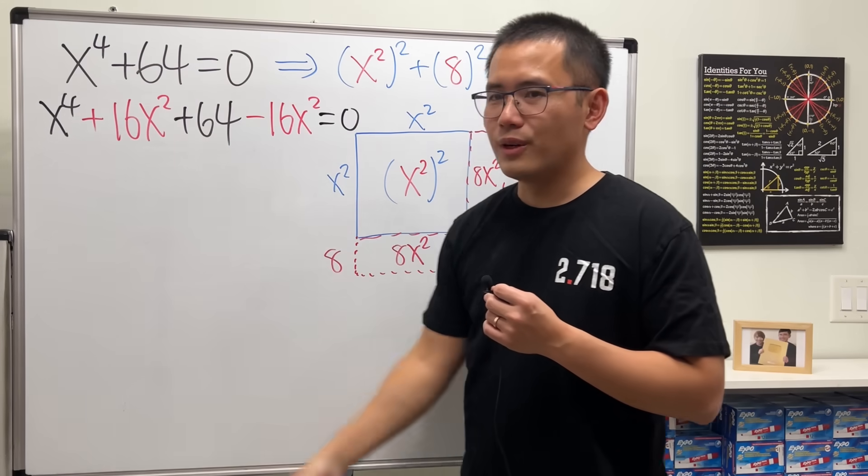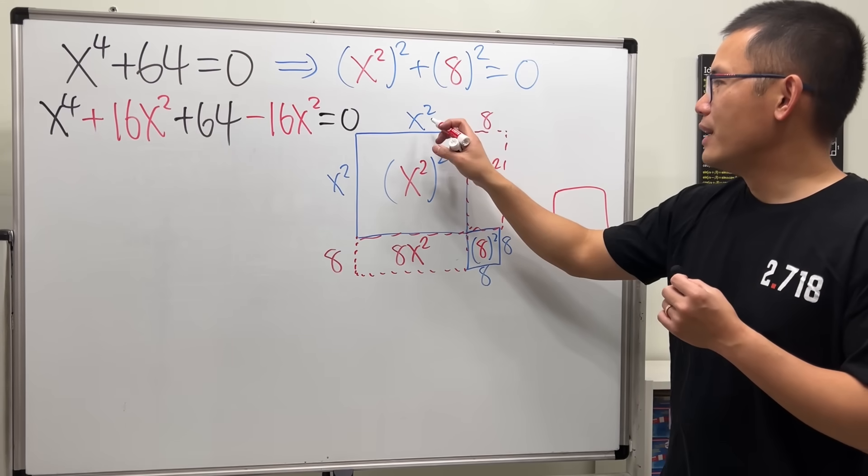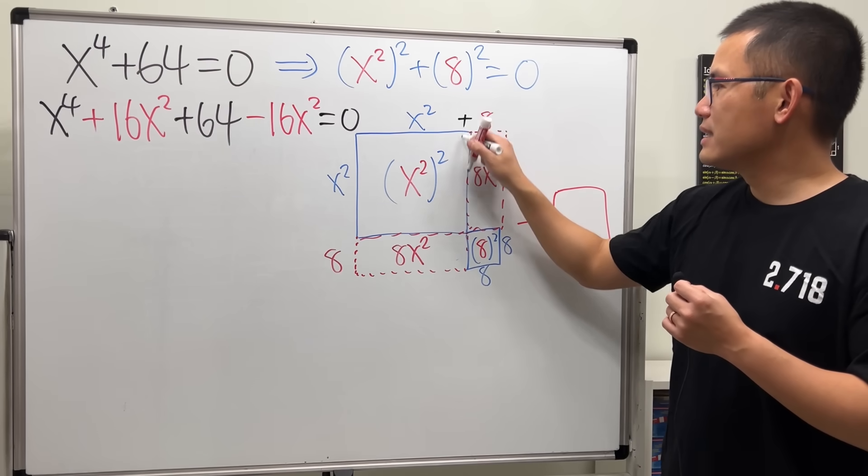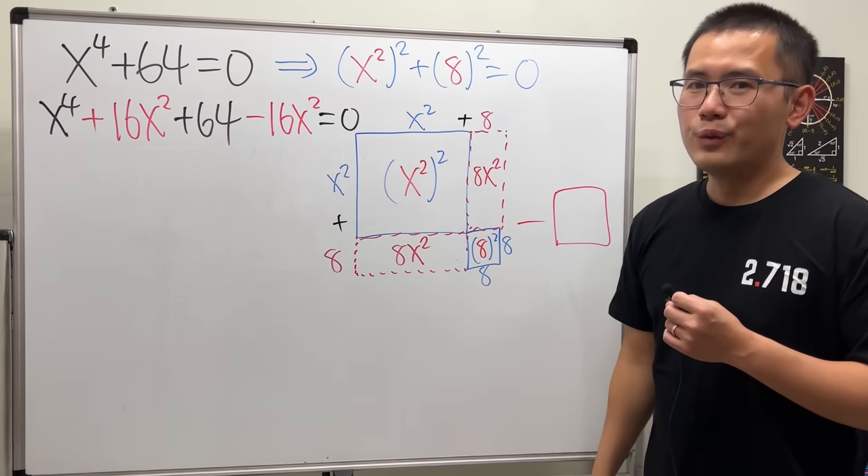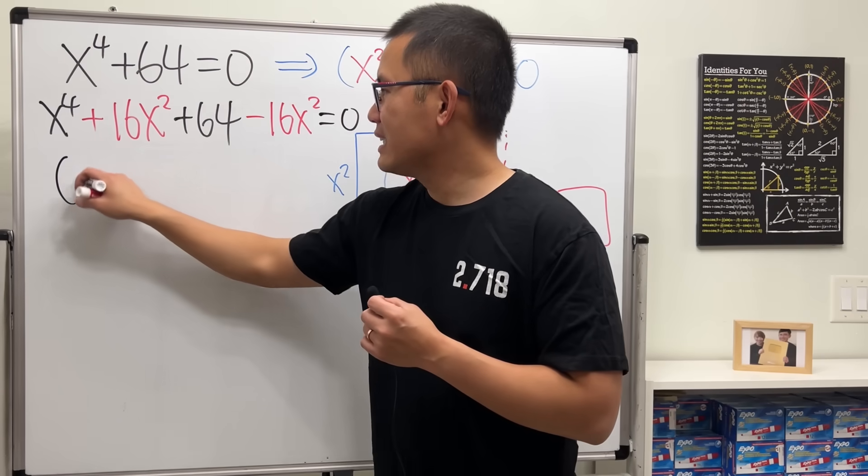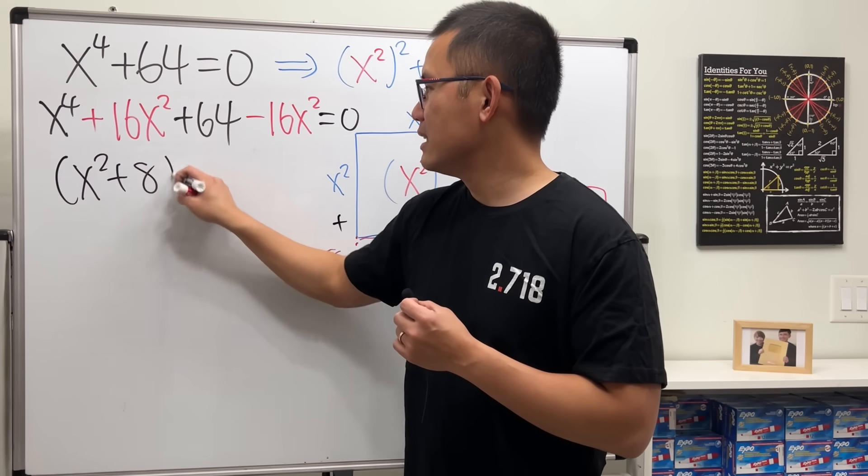Now, what's the first three terms though? Well, it's just this part, right? This is x squared plus 8, x squared plus 8. We can factor it and get x squared plus 8 squared.